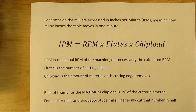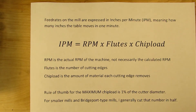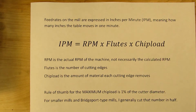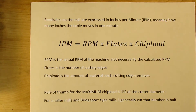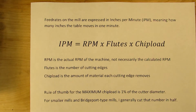The number of flutes is the number of cutting edges on your end mill, face mill, or whatever tool you're using. Usually those are 2-flute or 4-flute; sometimes larger end mills might be 6-flute cutters, and face mills could have 4, 6, or 8 flutes depending on how big they are.